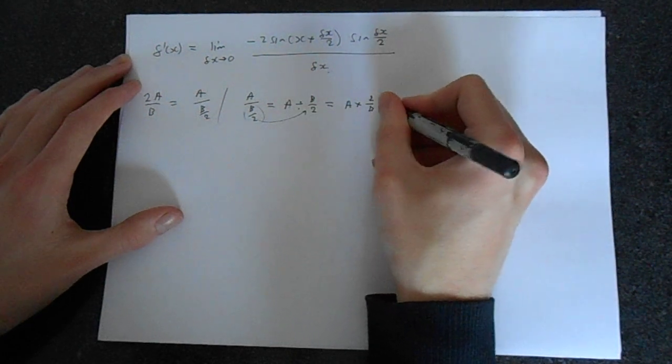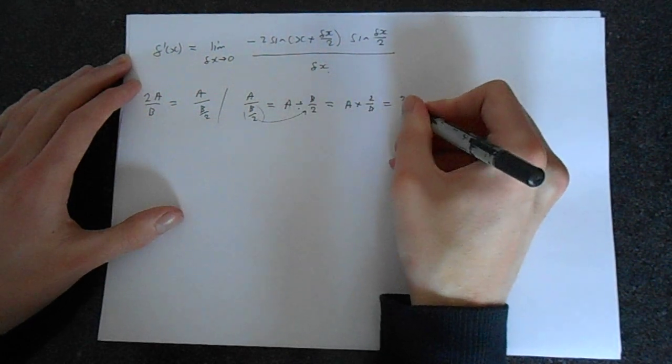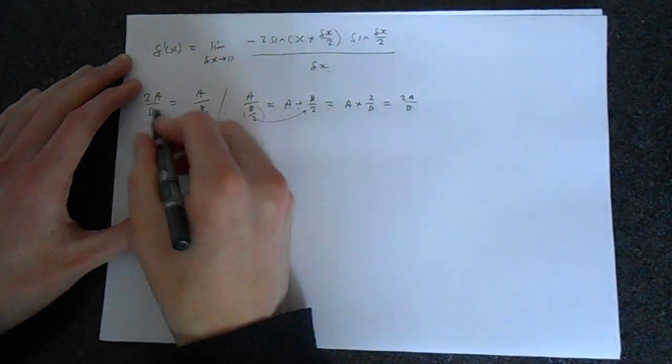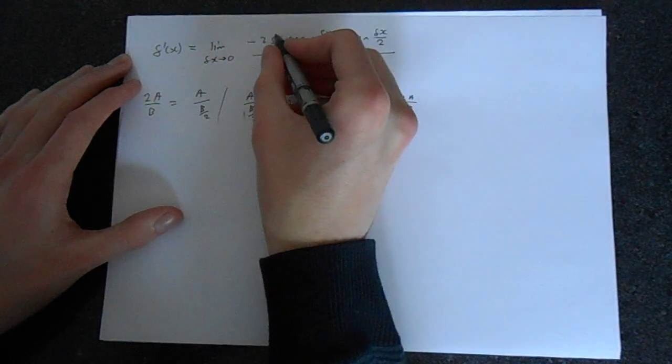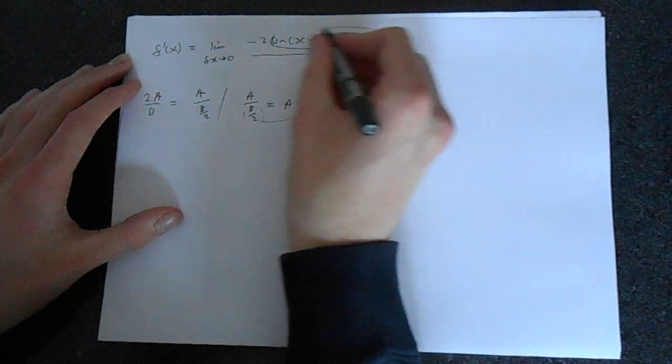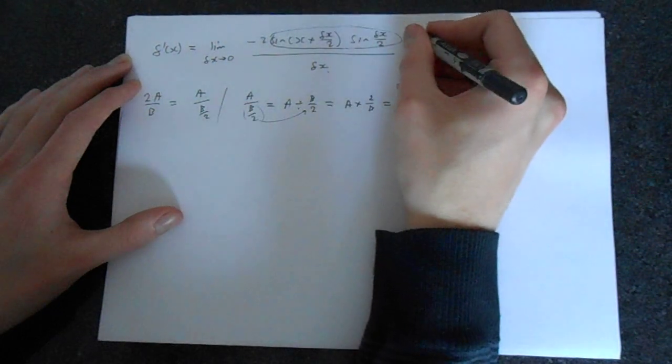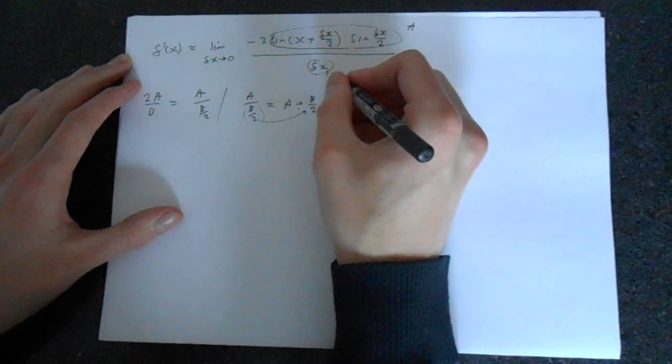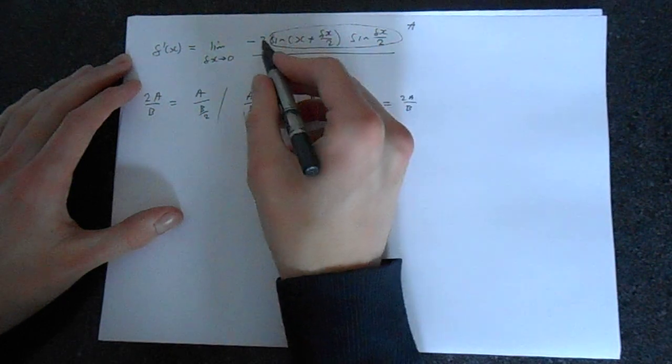So that's 2 over b which is 2a over b. So this makes sense and we can think of this whole thing here as our a, this is our b, and there is our 2.